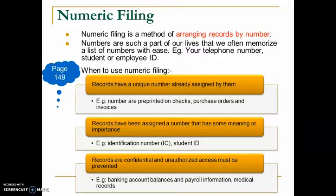Another example is your student ID, which begins with four digits representing the year you enrolled in the university — indicating which year you joined that institution. The third situation is when the company keeping the records requires confidentiality and needs to avoid unauthorized access to particular records. Numbers are used because you want to prevent people without authority from accessing those files.